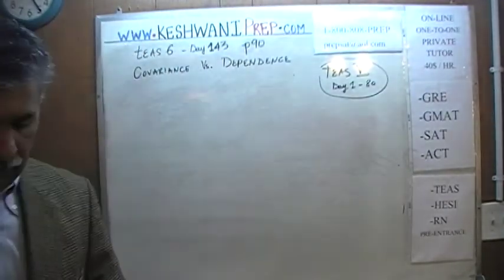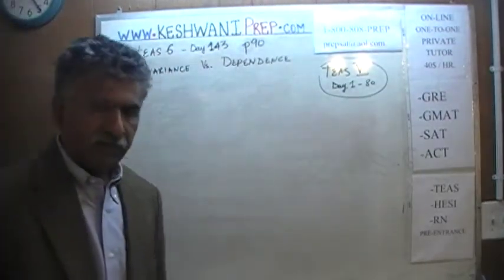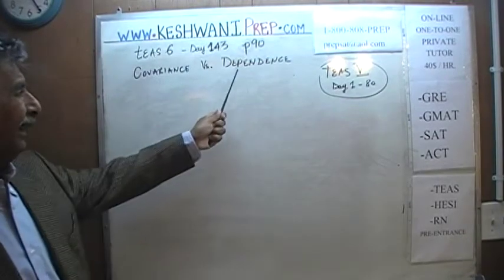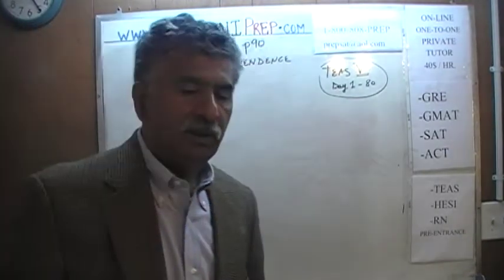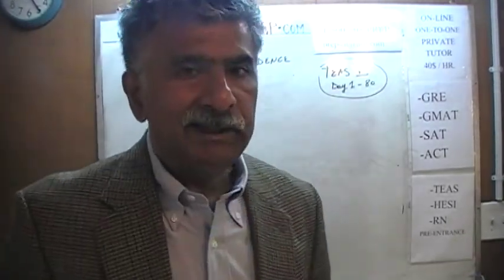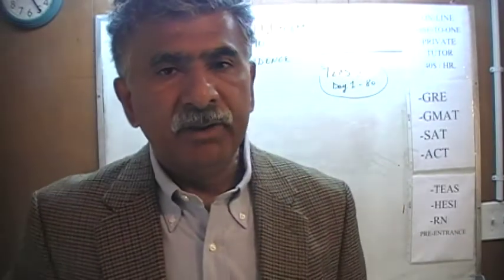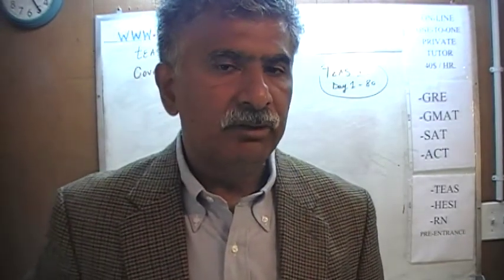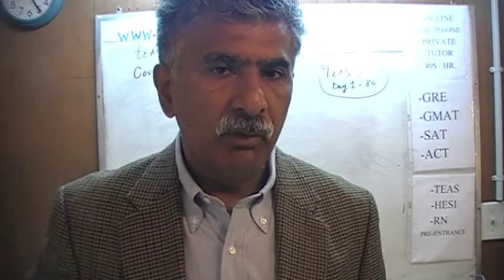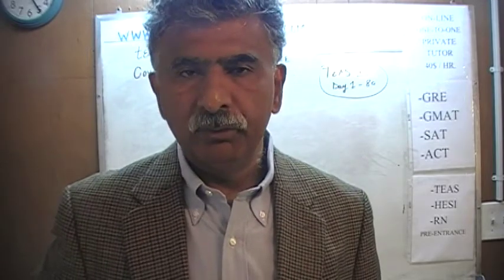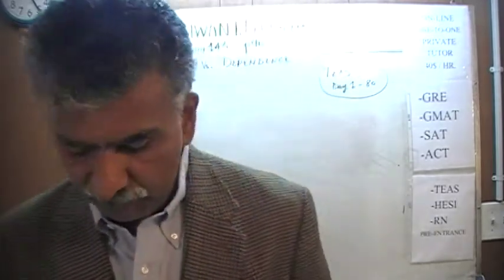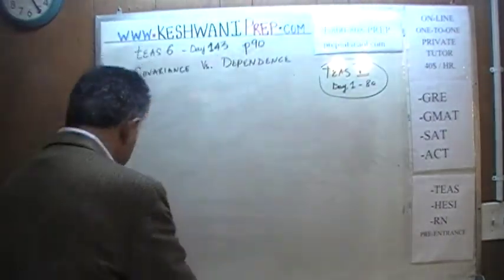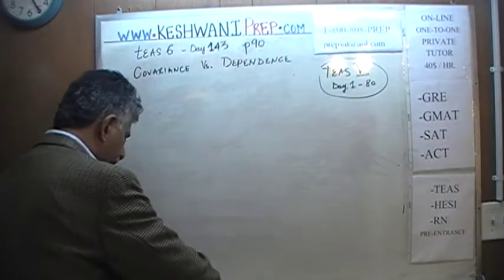Today I will talk about the difference between the concept of covariance and dependence. What does it mean when somebody claims that this variable is dependent on the other, as opposed to simply saying that there is a covariance — a positive covariance or a negative covariance? How do these two concepts differ? Let's start by means of an example.